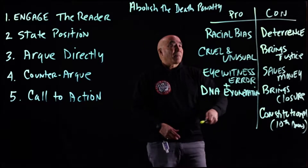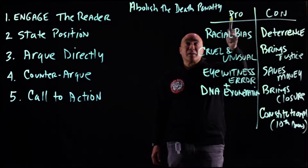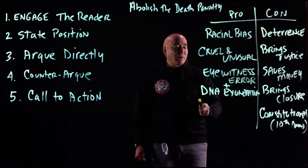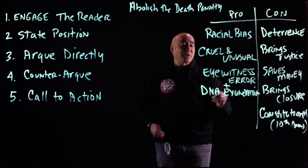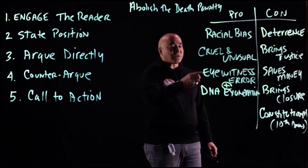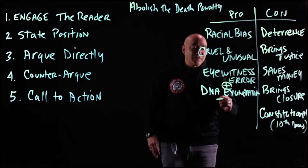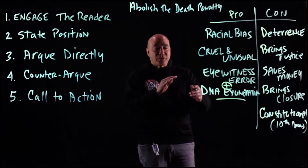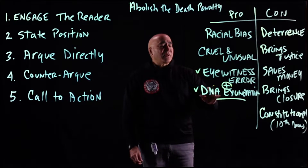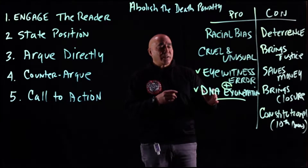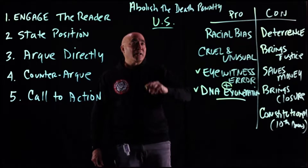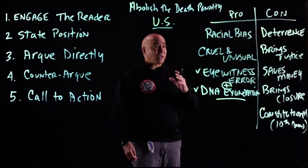To abolish the death penalty, we have: racial bias, cruel and unusual, eyewitness error, and DNA exonerations. I put a plus sign between those last two because most eyewitness misidentifications are resolved through DNA exoneration — they kind of work together, but you can keep them separate. DNA exoneration is now 99.9% accurate, and it started being used in the mid-1980s. Everything we're doing is focused on the United States.